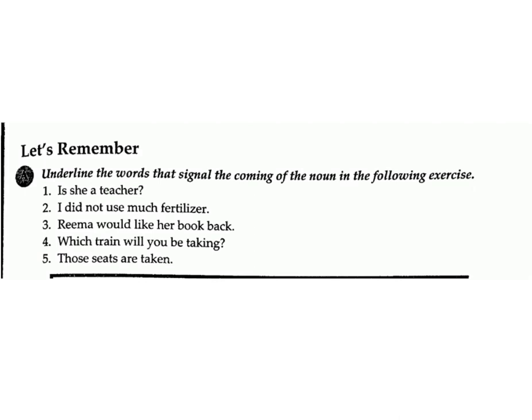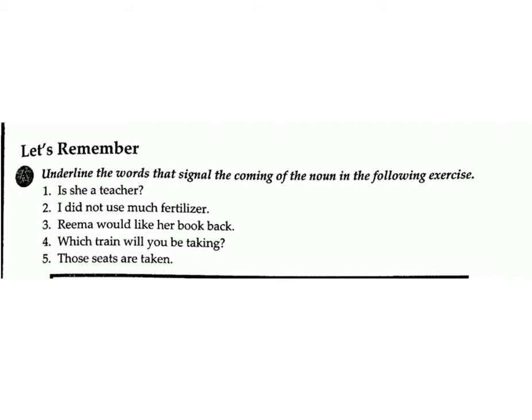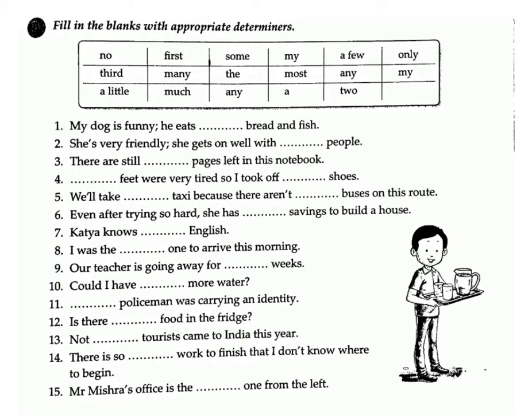Exercise A: Underline the words that signal the coming of the noun. (1) 'Is she a teacher?' — Answer: a. (2) 'I did not use much fertilizer.' — Answer: much. (3) 'Reema would like her book back.' — Answer: her. (4) 'Which train will she be taking?' — Answer: which. (5) 'Those seats are taken.' — Answer: those.